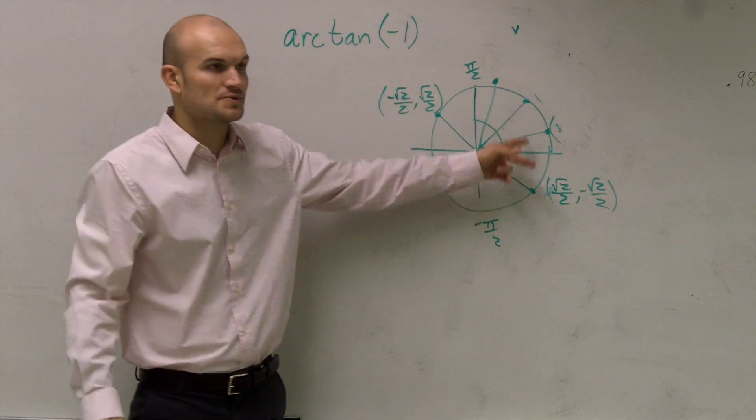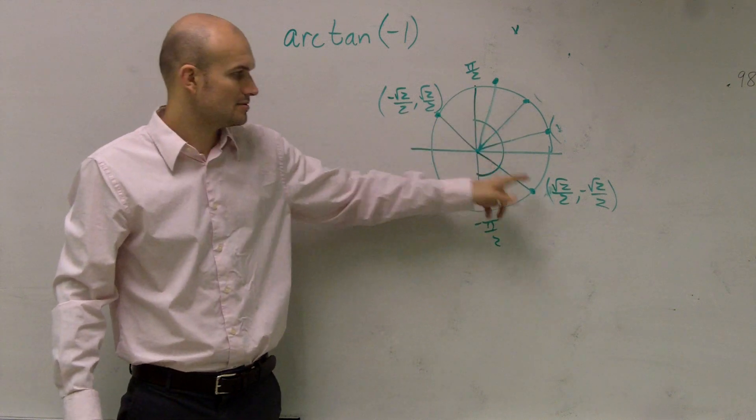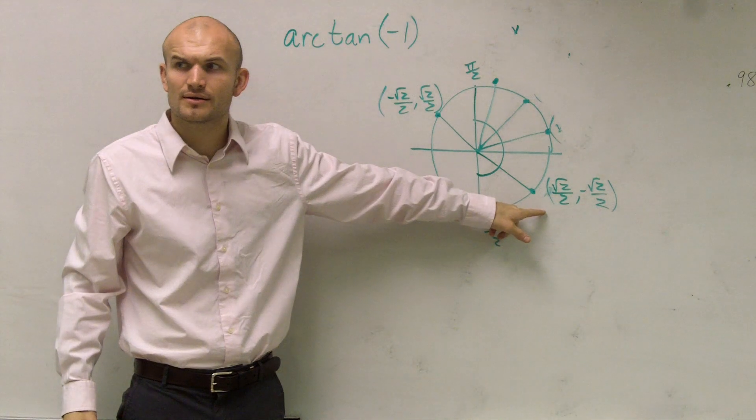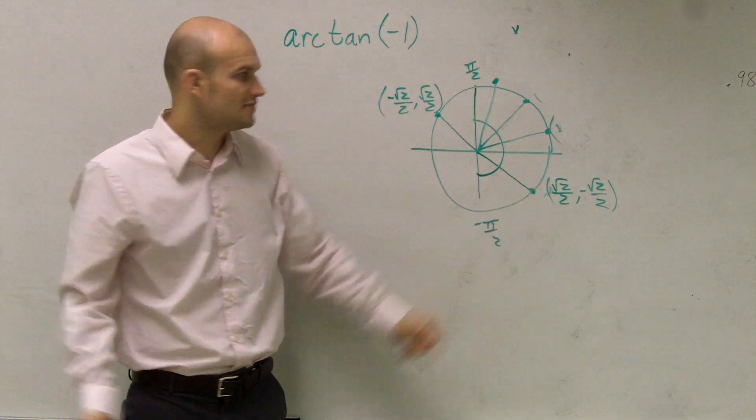So between these two points, what falls within our restriction? This point, right? And exactly what is this point down here? Negative pi over 4. Negative pi over 4.